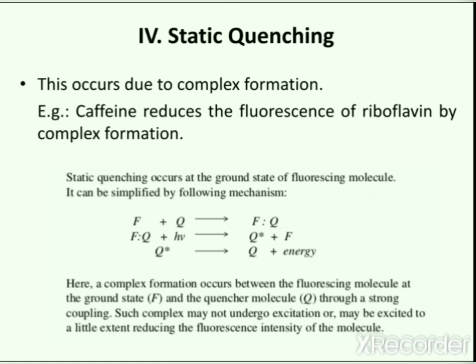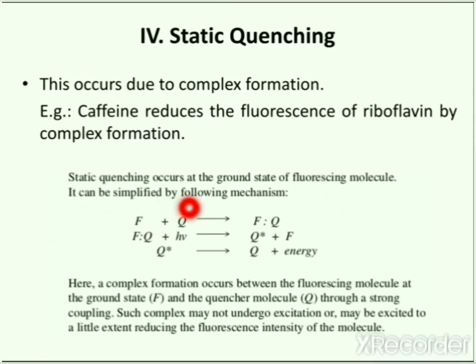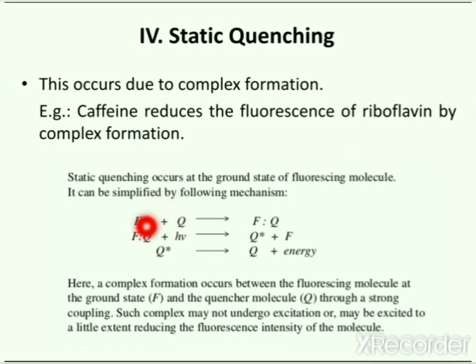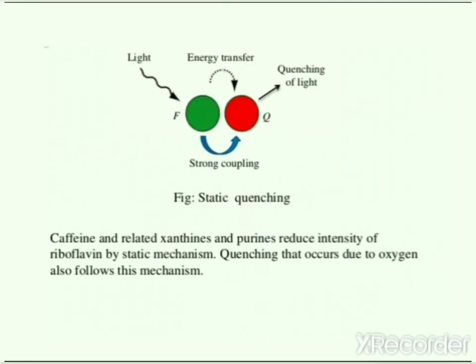The last type is static quenching, which occurs at the ground state of the fluorescent molecule due to complex formation. A complex forms between the fluorescent molecule at the ground state and the quencher molecule through strong coupling. When radiation is incident upon this complex, it results in energy transfer from the fluorescent molecule to the quencher, causing excitation of the quencher. Caffeine and related xanthines and purines reduce the intensity of riboflavin by a static mechanism. Quenching due to oxygen also follows this mechanism.